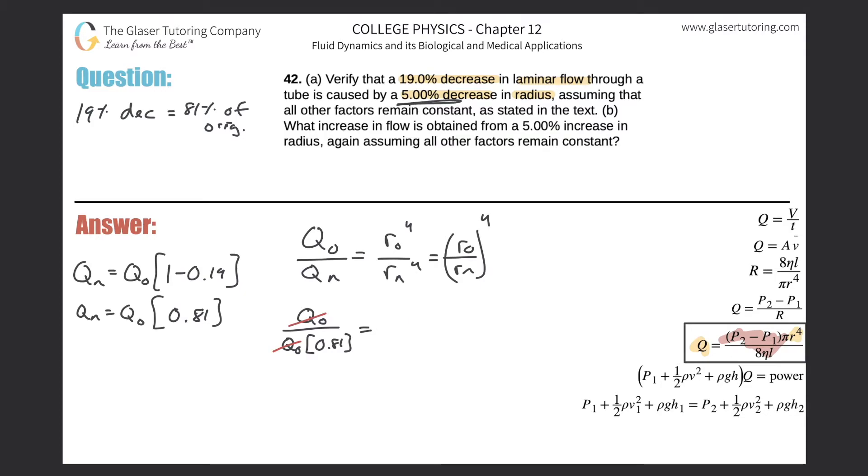So now it says a 5% decrease in the radius. It's the same thing now just in terms of the radius, that the new radius will be equal to the old radius multiplied by 1 minus that percent decrease of 0.05. In other words, the new radius is going to be 95% of the old radius.